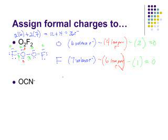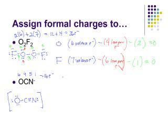Now let's look at the cyanate ion, which is our next practice problem. The cyanate ion has the skeleton structure O-C-N. Counting valence electrons: six from the oxygen, four from the carbon, five from the nitrogen, and one extra because of the negative charge, giving us a total of 16 valence electrons. This structure won't work with all single bonds — to make it work we're going to need triple bonds. We'll put in all of our lone pair electrons; everyone has a stable octet, and we have an overall minus one charge.